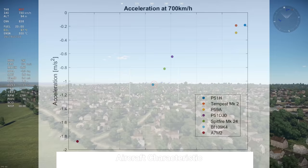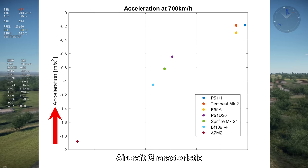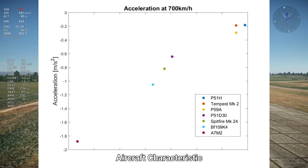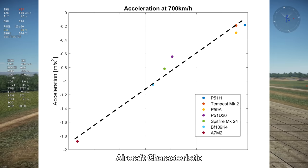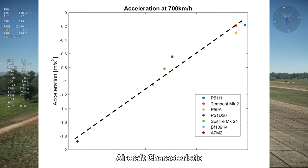Let's present the type of graph and the aircraft that will be compared in this video. The graph shows the acceleration, or rather deceleration, of the aircraft at 700 kph at sea level on the vertical axis as a function of an aircraft characteristic on the horizontal axis. The higher the acceleration, the better the aircraft will retain energy in a straight line. The goal is to find the aircraft characteristics that correlate well with acceleration. For example, this characteristic correlates very well with acceleration since the aircraft form a straight line from the worst to the best LER aircraft.